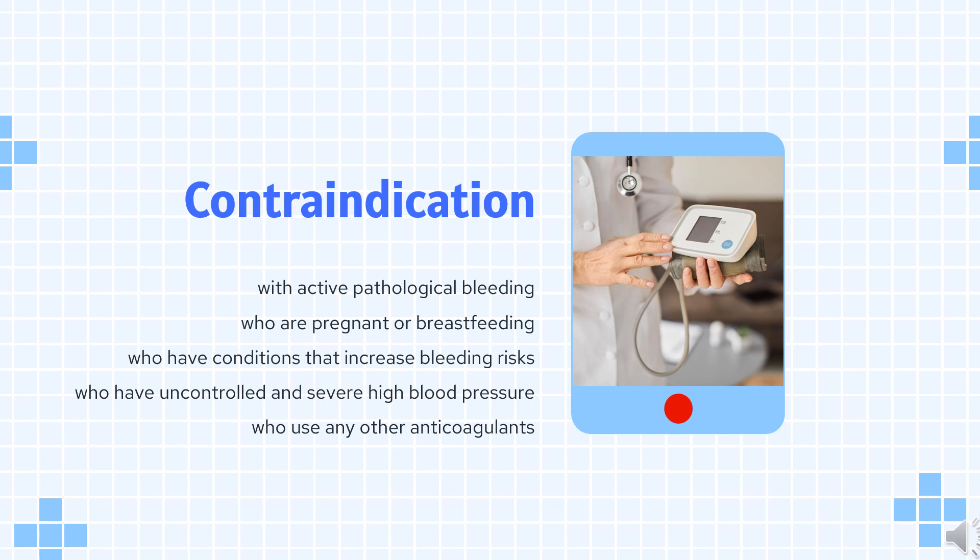Contraindications: Edoxaban is often contraindicated in people with active pathological bleeding; who are pregnant or breastfeeding; or who have conditions that increase bleeding risk — for example, liver disease associated with coagulopathy, current or recent gastrointestinal ulceration, or malignant neoplasms at high risk of bleeding.